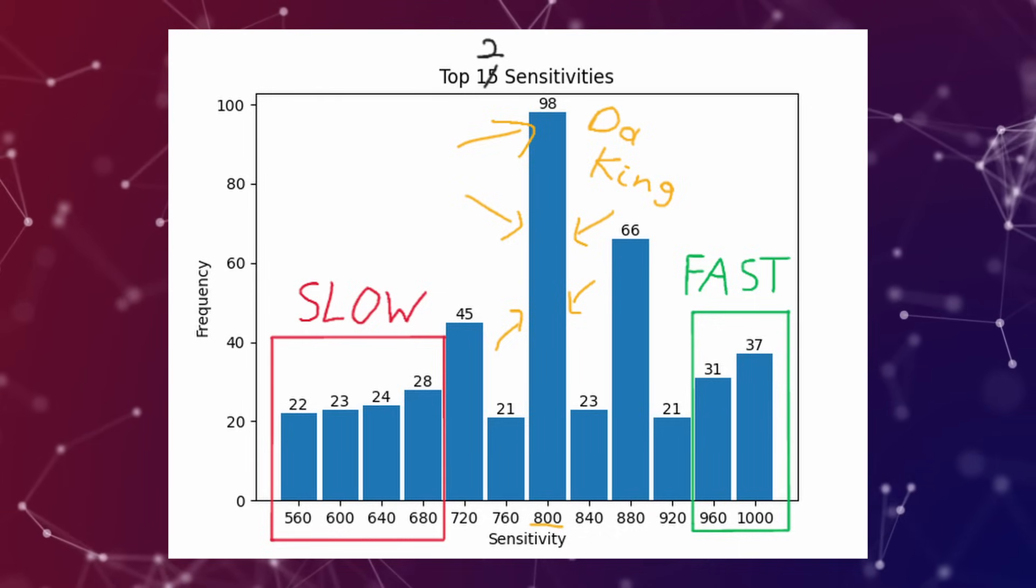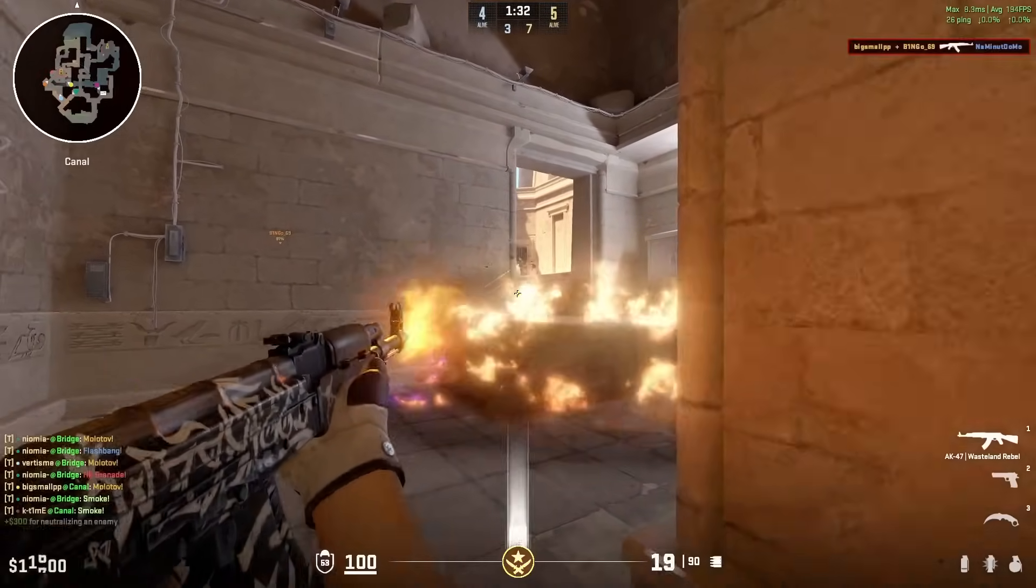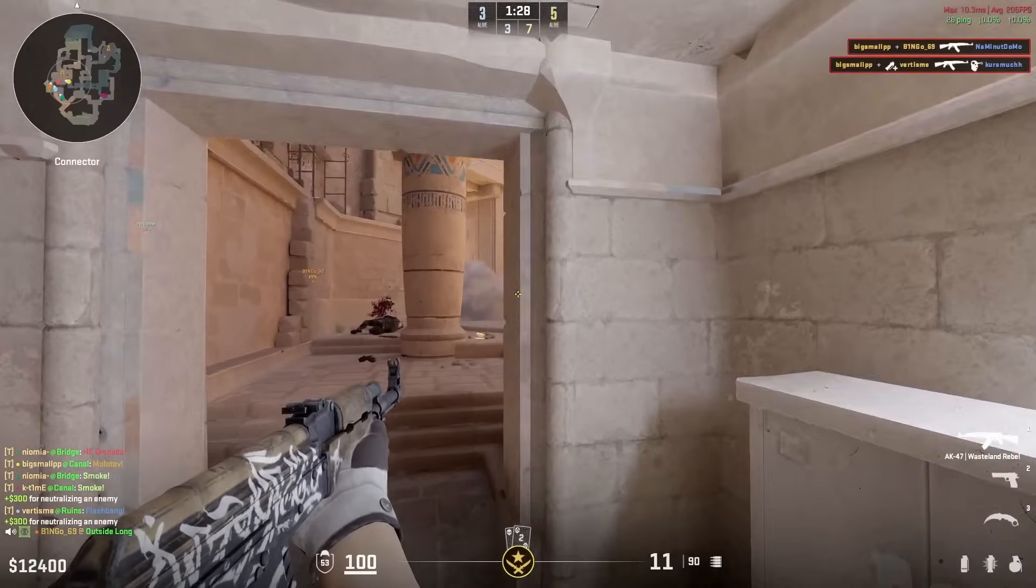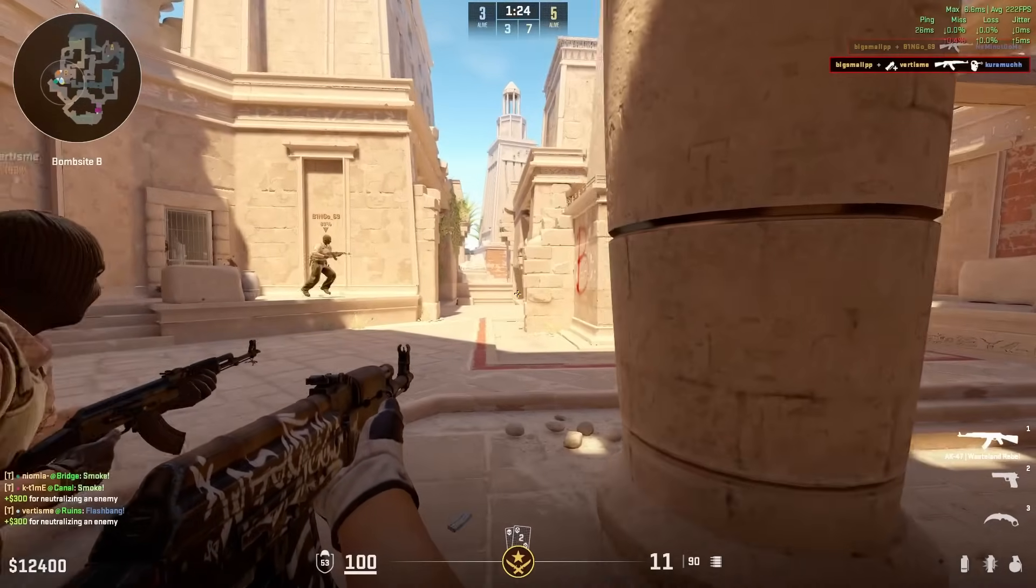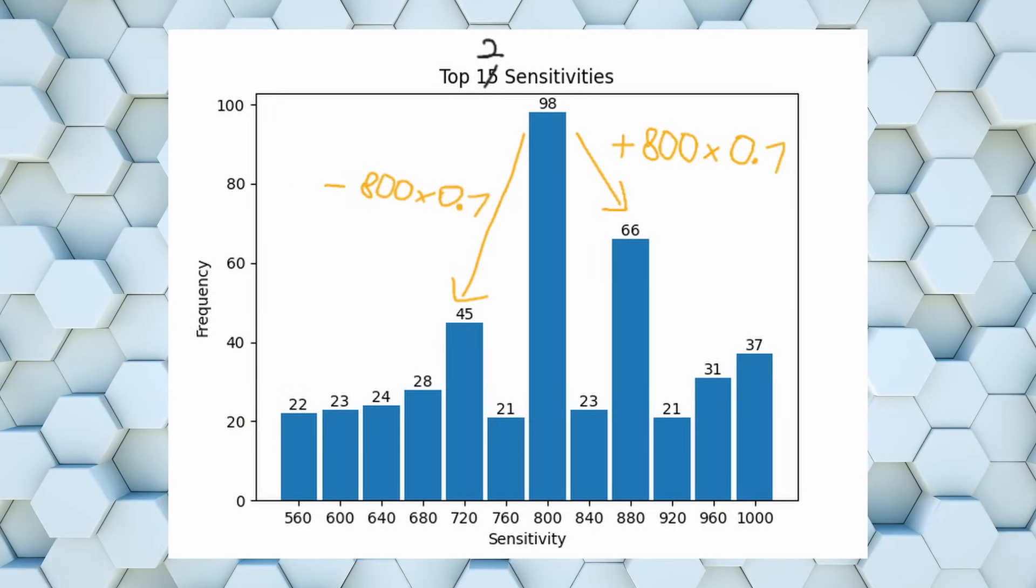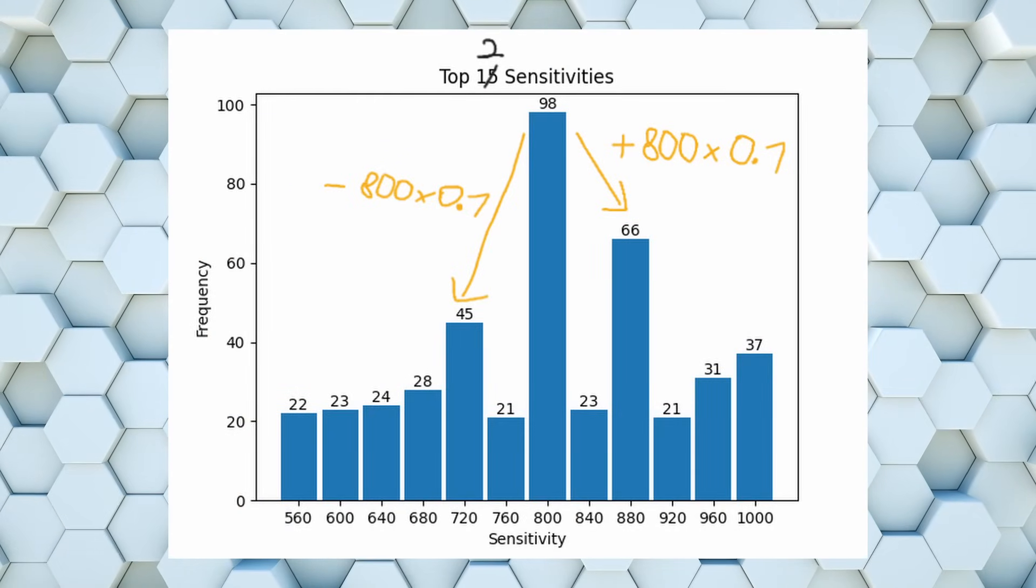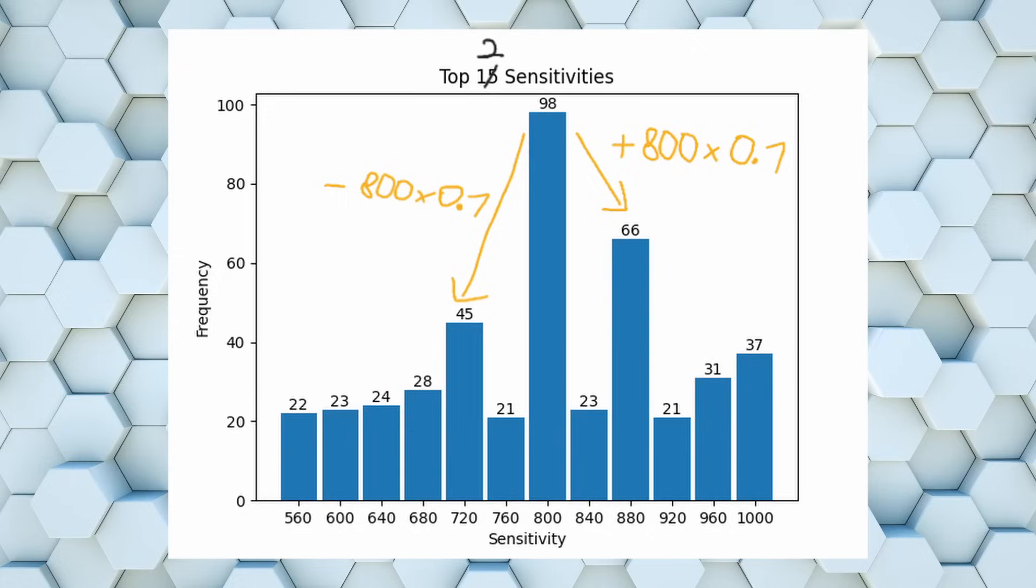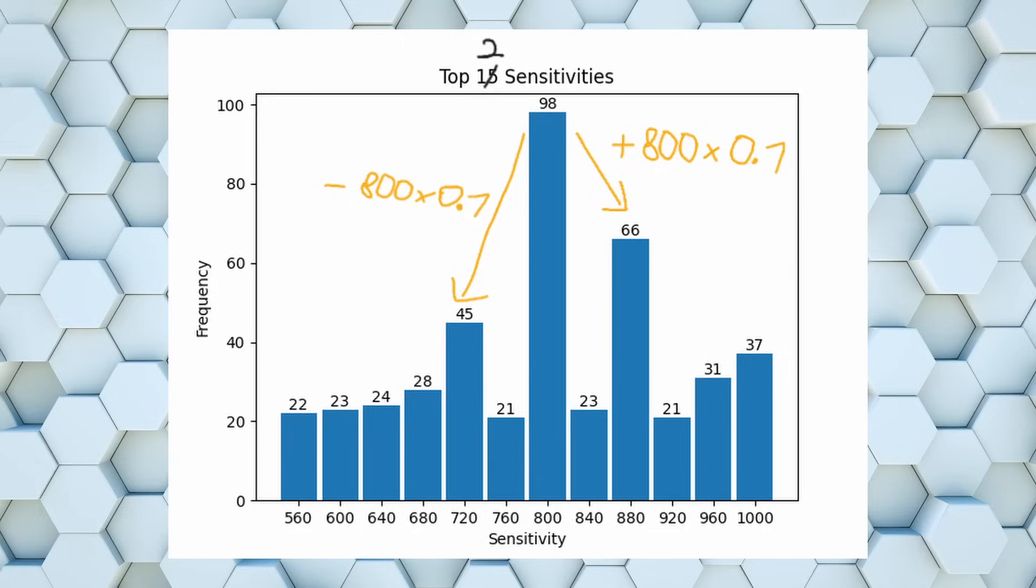So, my guess on why 720, 800 and 880 eDPI are the most common values is most likely that most pros use 800 DPI and a sensitivity of 1 as their baseline and then simply adjust it by 0.1 to make it slightly faster or slightly slower, which leads us to the aforementioned 720 and 880 effective DPI, since 800 times 0.1 is exactly equal to 80 effective DPI, more or less in our case.